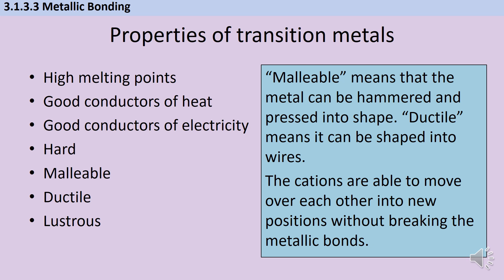The word malleable means that a metal can be hammered and pressed into a shape, whereas ductile means that it can be shaped into wires. Both of these are a result of the lattice structure of a metal. As we said at the start, the positive ions are arranged in really regular rows, and those regular rows are able to just slide over each other. And it's possible to do that without breaking the metallic bonds. This explains why it's possible to hit a metal in one place and just have those particles move along the top of the next layer.